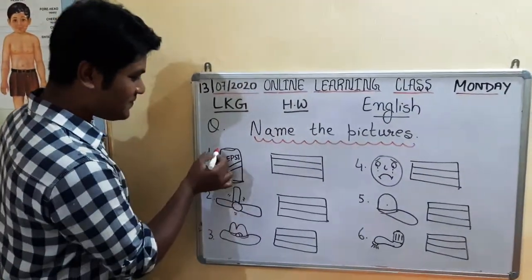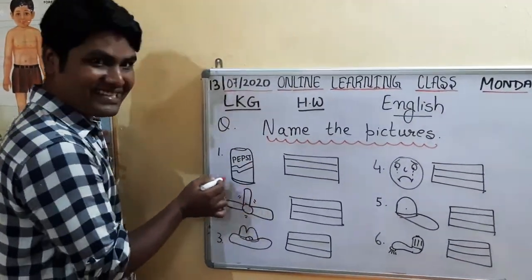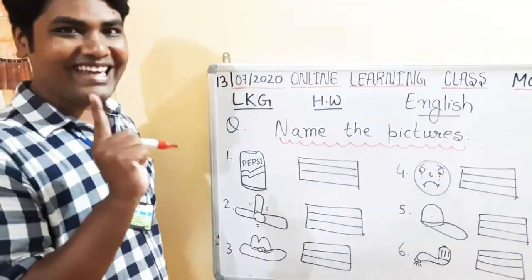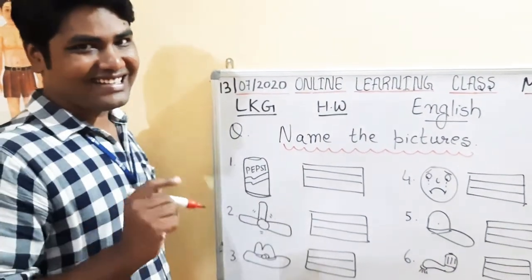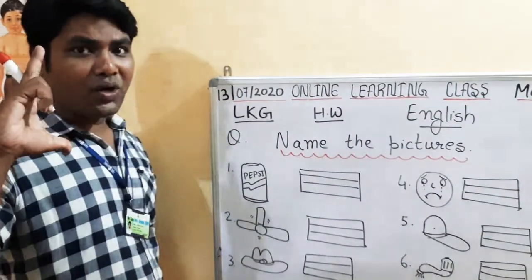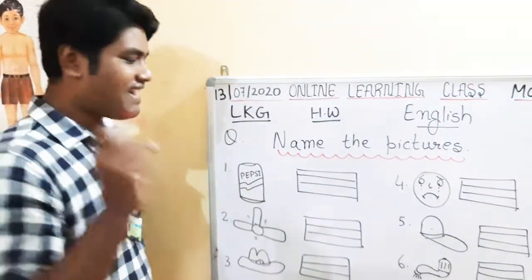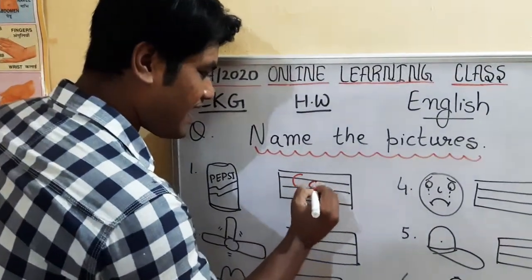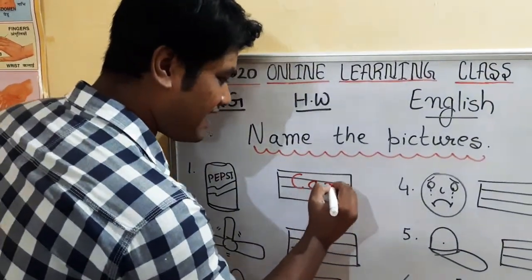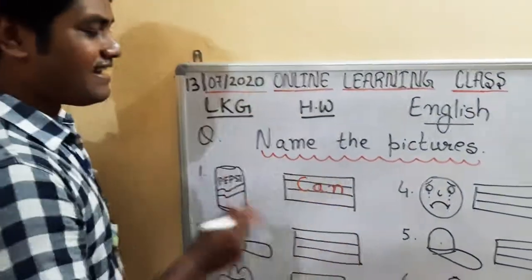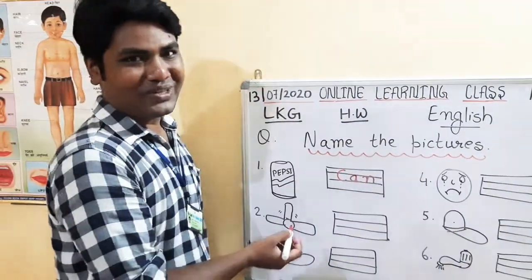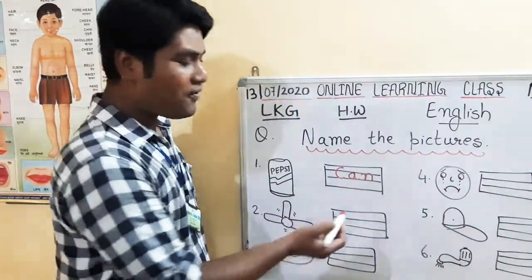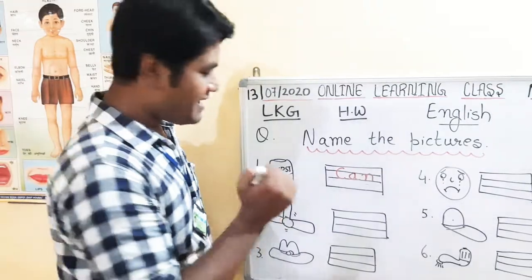What is this? This is a can. Yes, it's a watering can. So write down C-A-N, can. A-N, N sound words. Can is an example of N sound words.